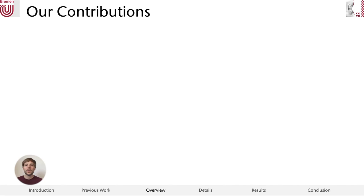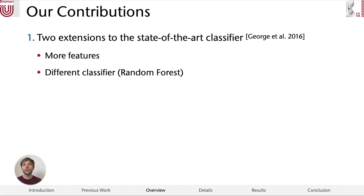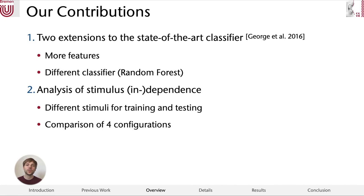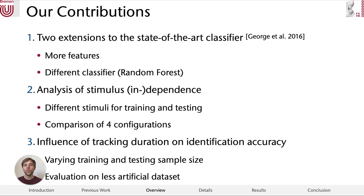In this work, we present three major contributions. First, we extend the current state-of-the-art classifier by George et al. by adding more features to increase its accuracy, and second, we use random forests to increase the robustness in the task-independent setting. Second, we analyze how using a different stimulus in testing than it was used for training influences the identification accuracy.